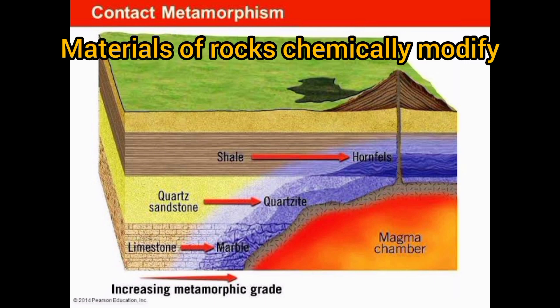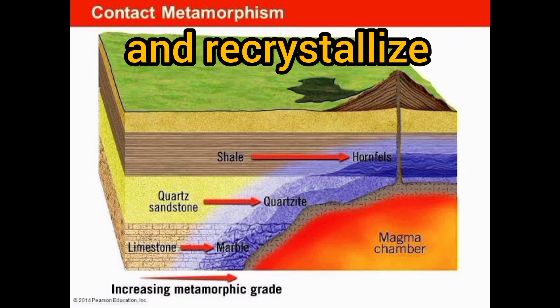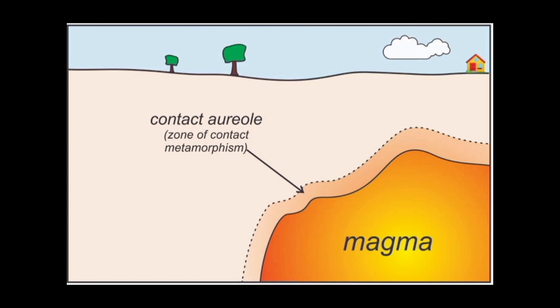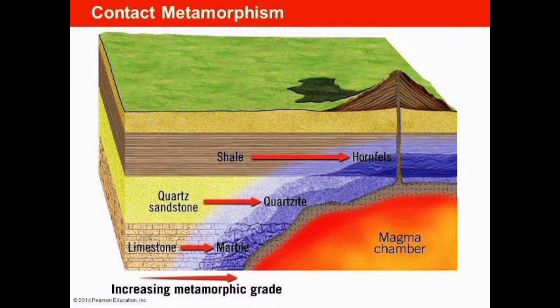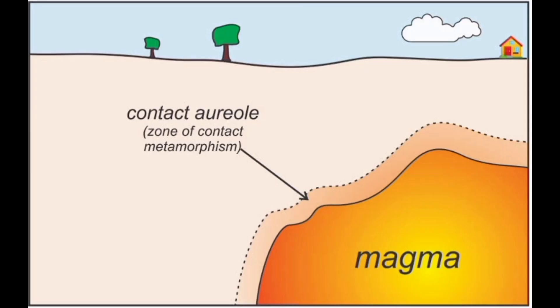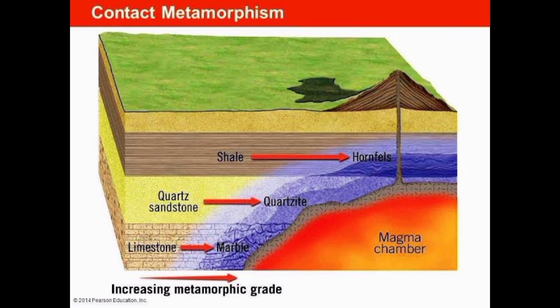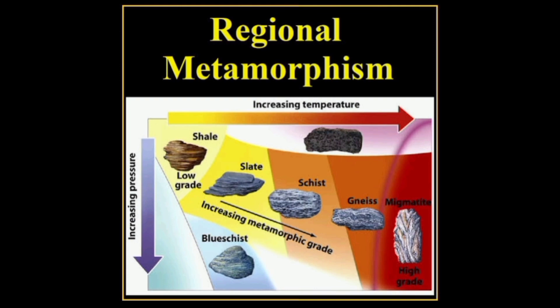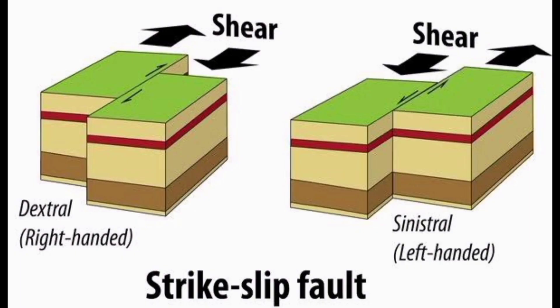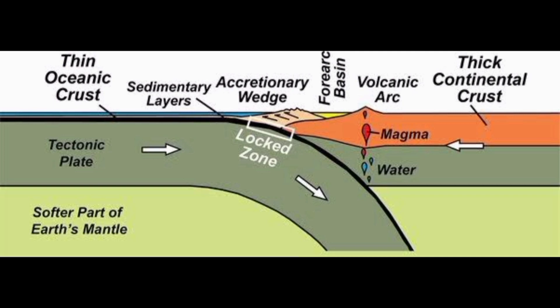The materials of rocks chemically modify and recrystallize due to thermal metamorphism. There are two types of thermal metamorphism: Contact Metamorphism and Regional Metamorphism. In Contact Metamorphism, the rocks come in contact with hot intruding magma and lava and the rock materials recrystallize under high temperatures. In Regional Metamorphism, the rocks experience recrystallization due to thermal deformation caused by tectonic shearing together with high temperature or pressure or both.